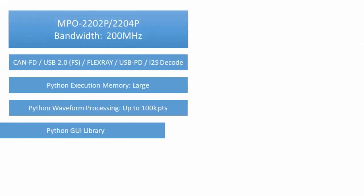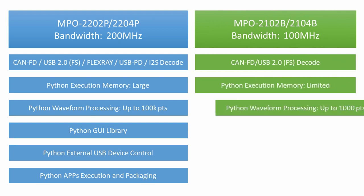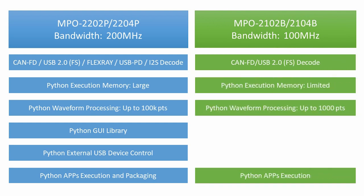MPO-2000 is available in four models. The professional version offers 200 MHz bandwidth with more bus decode capabilities. It utilizes more system resources during Python script execution, allowing the use of Python GUI libraries and control of external USB devices. The basic version offers 100 MHz bandwidth with fewer bus decode capabilities. It uses fewer system resources during Python script execution and cannot access GUI libraries or control external USB devices.